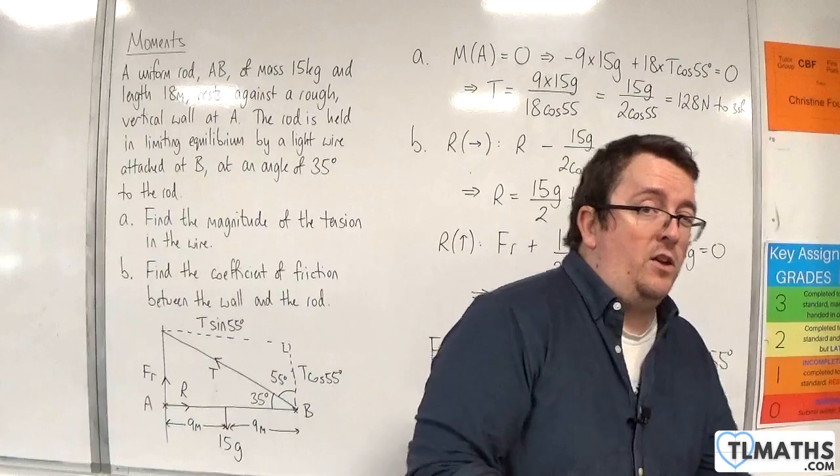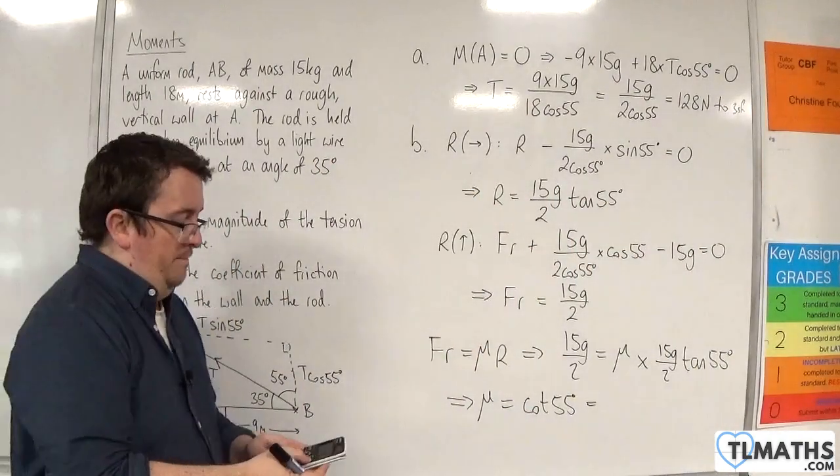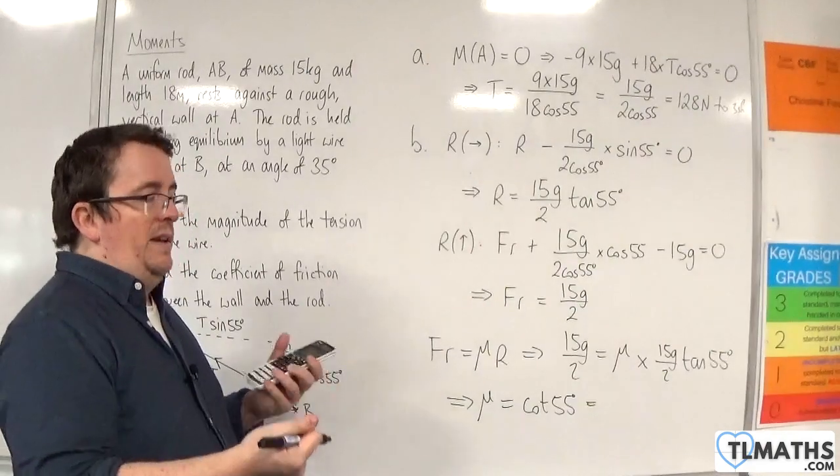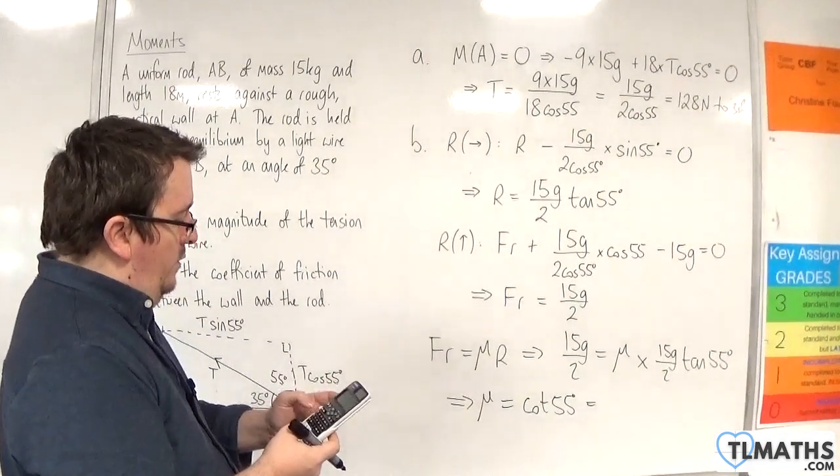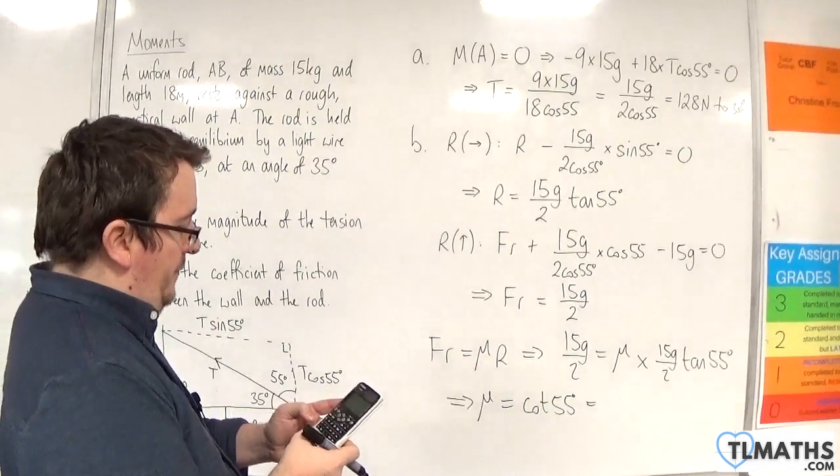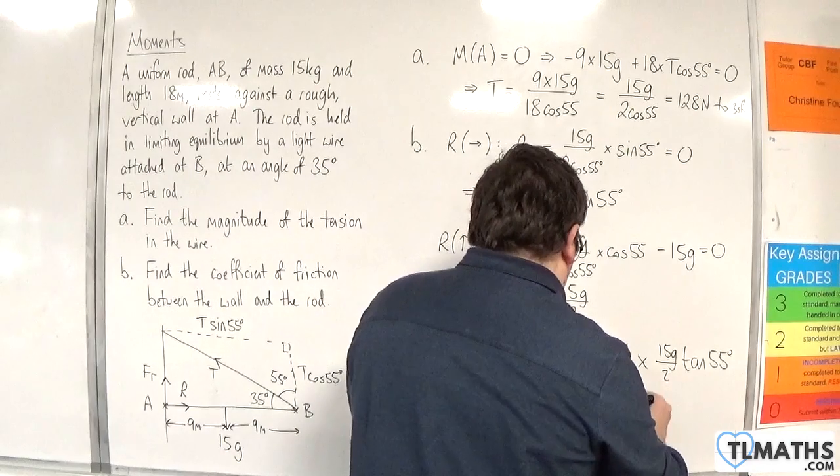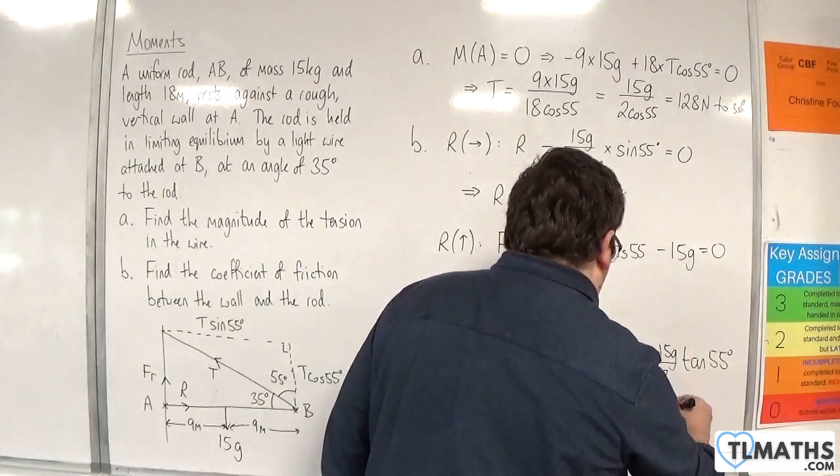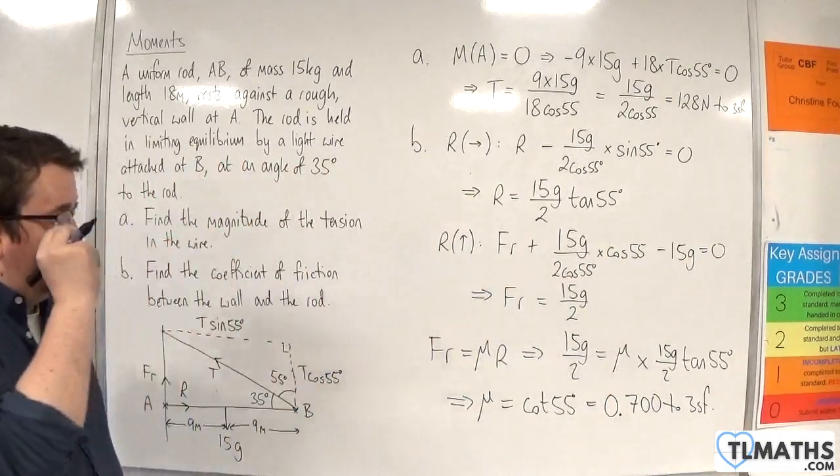Dividing both sides by 15g over 2 tan of 55 means that mu would have to be 1 over tan of 55, or cot of 55. If you haven't met cot yet, cot is 1 over tan, or probably better think of it as cosine over sine. So 1 over tan of 55, and that's 0.700 to 3 significant figures.